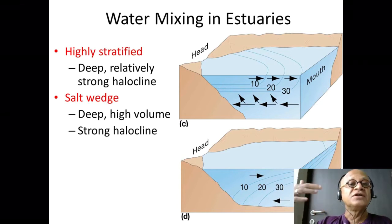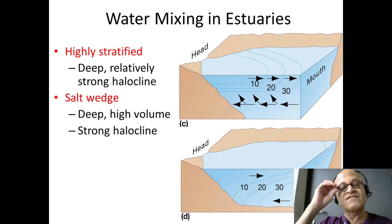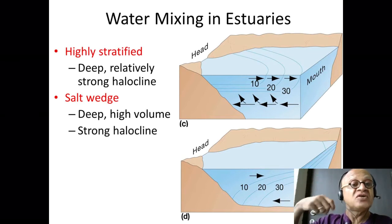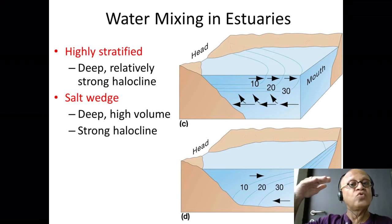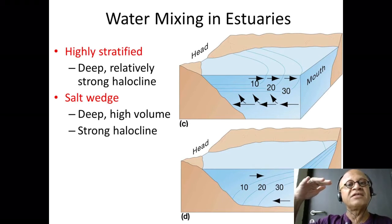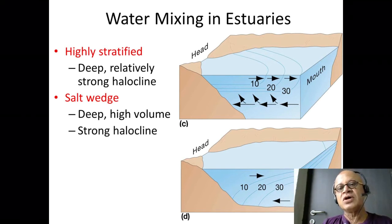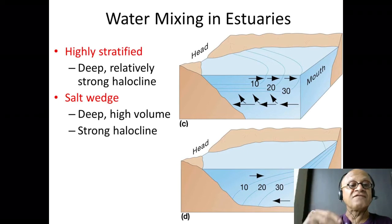Highly stratified — when the estuary is deep and you have a relatively strong halocline, the ocean water doesn't mix much with the surface. This depends on what is called surface turbulent kinetic energy, which is a combination of the cube of the wind speed — because wind can stir the water — and buoyancy forcing, meaning heating or cooling. Heating makes the surface warmer and stratifies the water more, whereas cooling, by evaporation or wintertime heat loss, can make densities heavier and facilitate mixing. In the highly stratified case, there is very little vertical mixing.